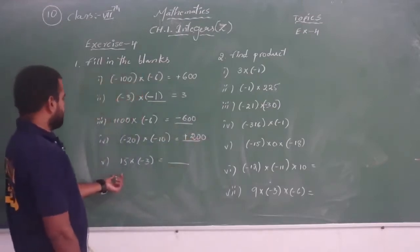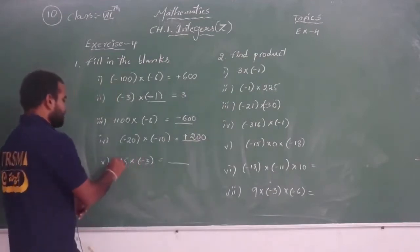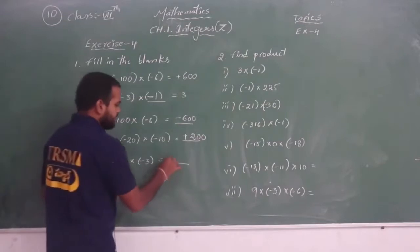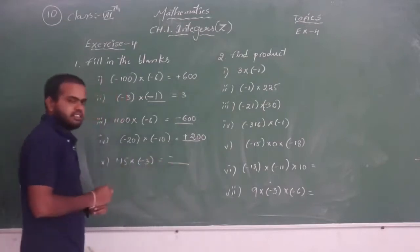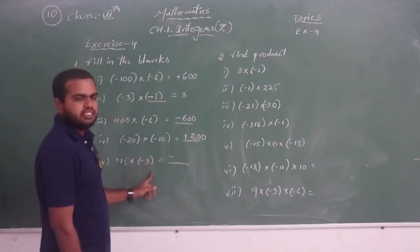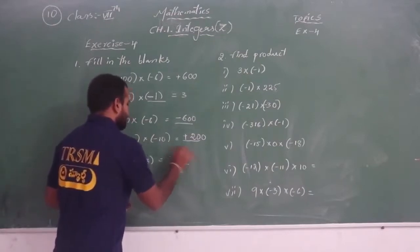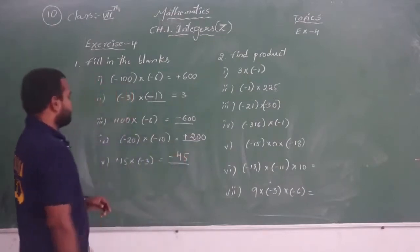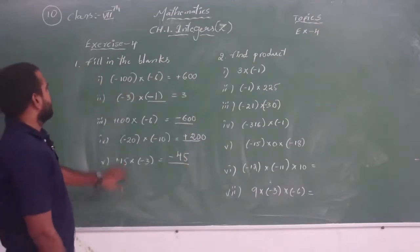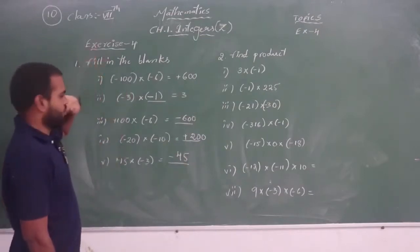Now see the last one: 15 into minus 3. Here, no sign means plus, so plus into minus is nothing but minus. 15 threes are 45, so the answer is minus 45. This completes the first question of Exercise 4.